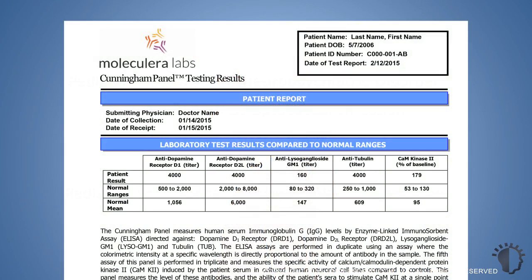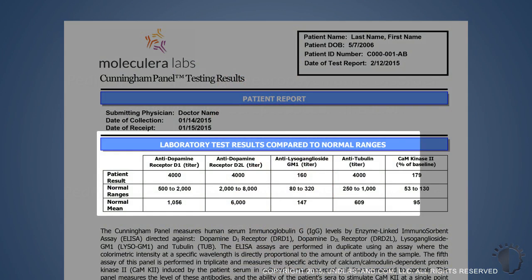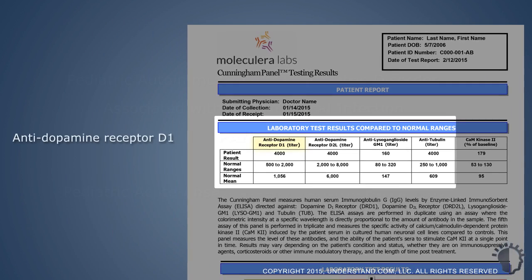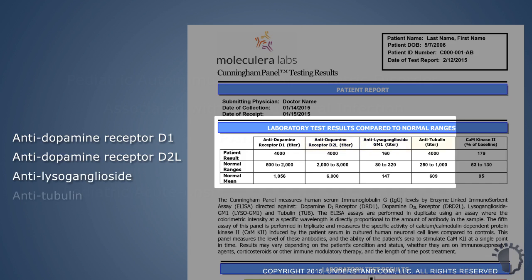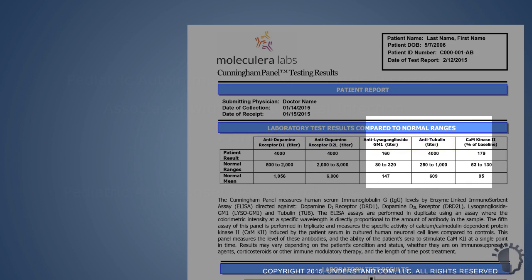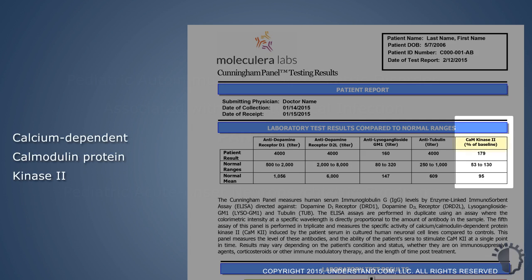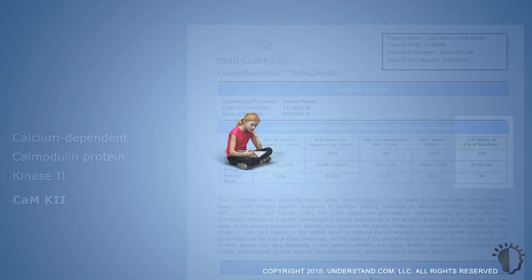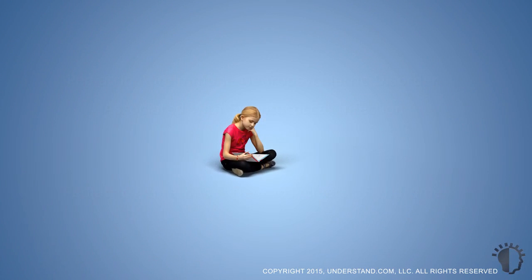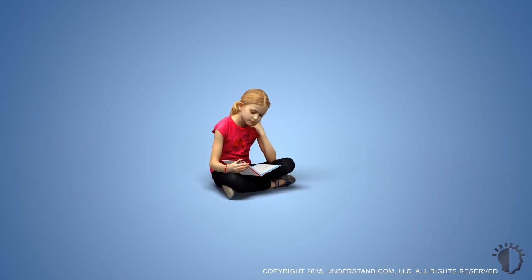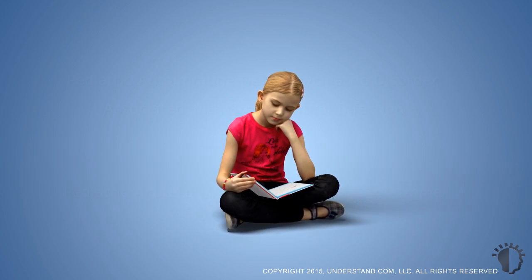The Cunningham Panel is comprised of five distinct tests. Four of these tests use enzyme-linked immunosorbent assays, or ELISAs, to measure the circulating levels of a patient's autoantibodies directed against four neuronal antigen targets: antidopamine receptor D1, antidopamine receptor D2L, antilysoganglioside, and antitubulin. Additionally, a fifth test measures the antibody-mediated activity of the enzyme calcium-dependent calmodulin protein kinase 2, or CamKinase 2. Each of these autoimmune targets was chosen because of its correlation to symptoms of neuropsychiatric behavior associated with Sydenham Chorea, PANDAS, and PANS.